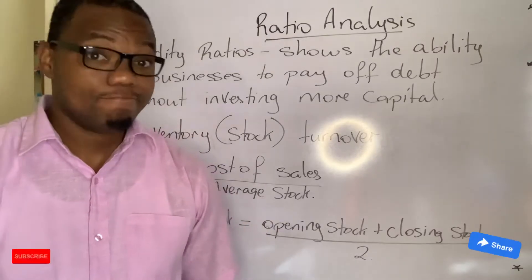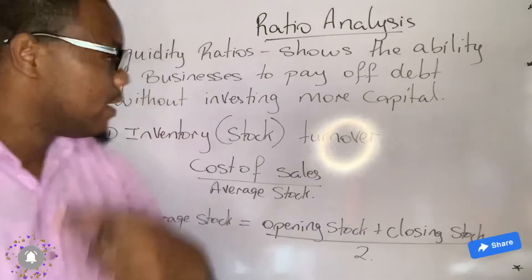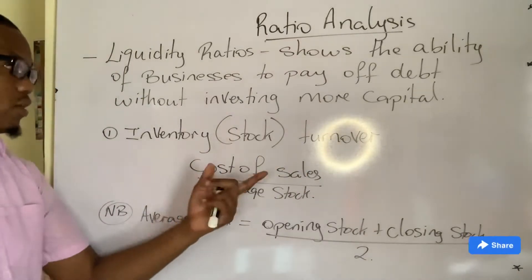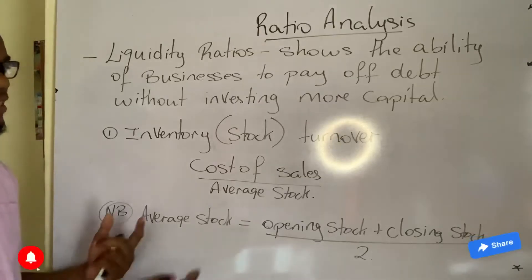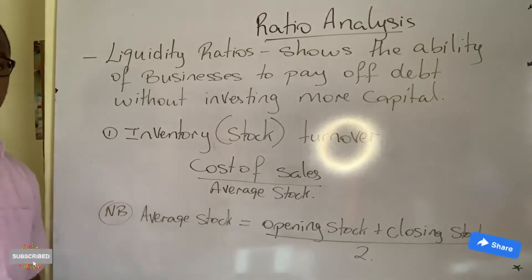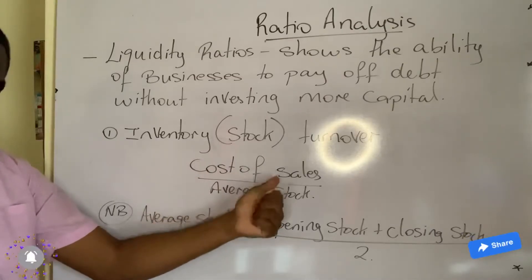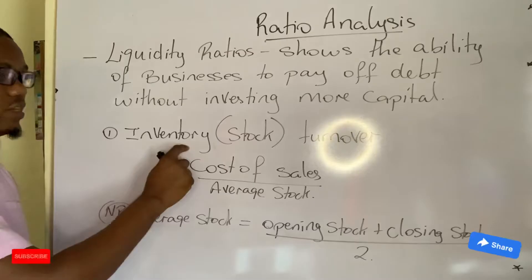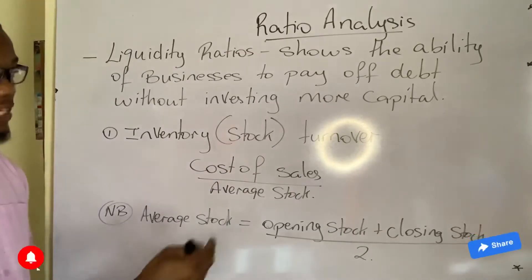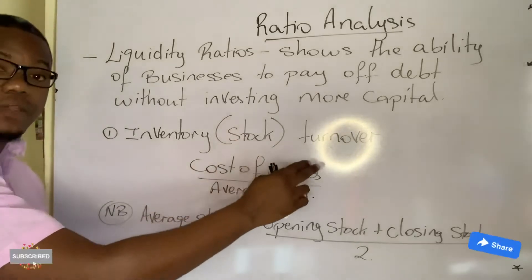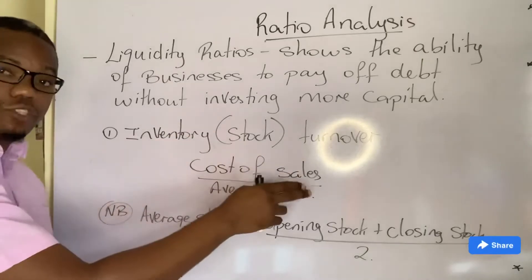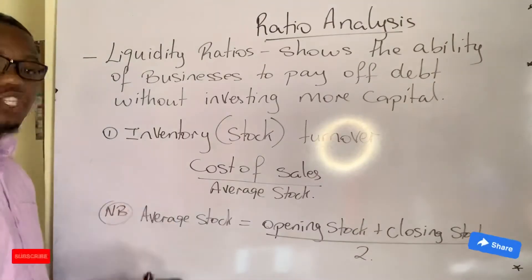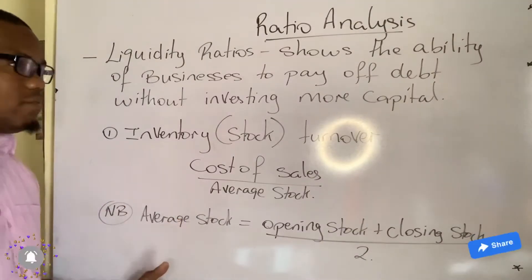The first liquidity ratio is the inventory or stock turnover ratio. I struggle with the name because we've been used to calling it the stock turnover ratio, but the new name is inventory turnover. You have to pay attention to that — sometimes they may refer to it as stock turnover ratio, sometimes as inventory turnover.